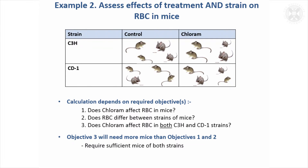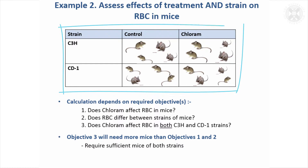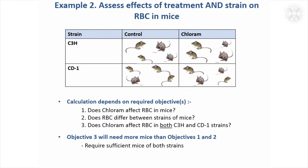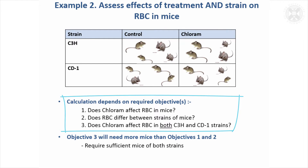We'll go back to one of the designs we considered earlier this morning. It's a two-way, two-factor design where we're trying to assess the effects of a treatment — active treatment, chloram — and we want to look at the effect of the strain of mice as well. We've got different objectives: we want to see the effect of the treatment, the effect of the strain, and we might also ask does the treatment affect the strains individually.